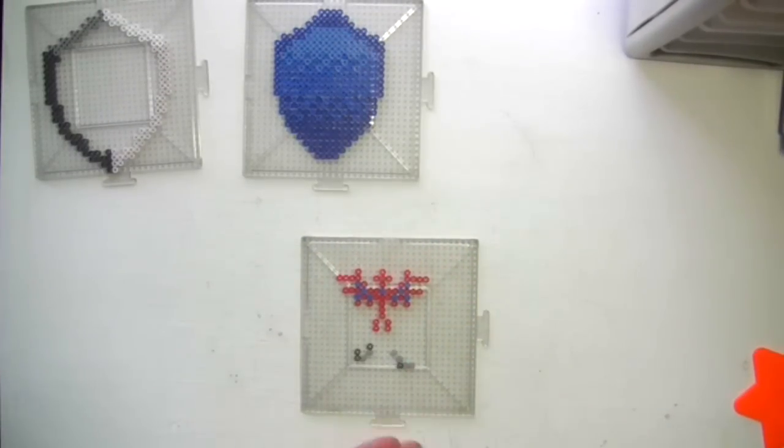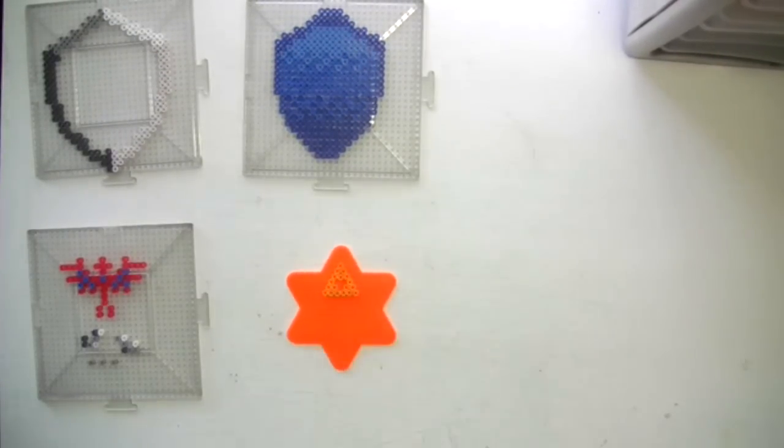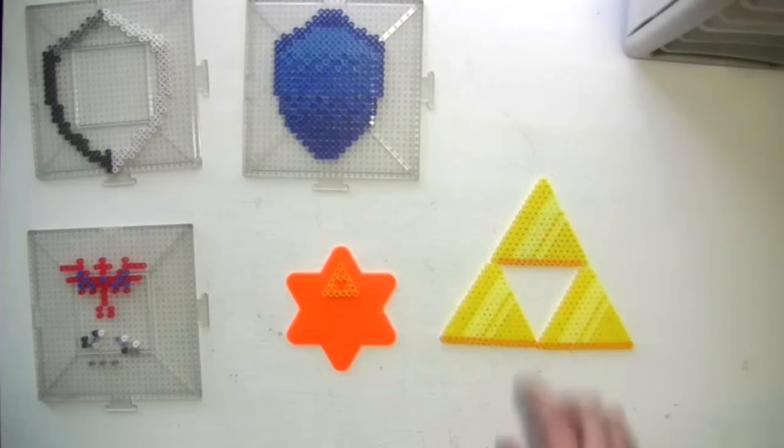Here's a few odds and ends to adorn the shield with. The star shaped pegboards are perfect for making a triforce, small or large.